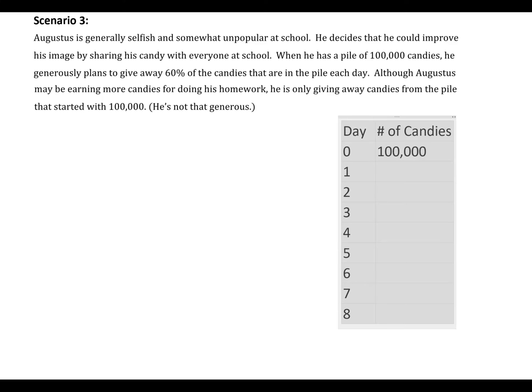But again, scenario three is the focus of this task. Since scenario three is the focus of the task, I'm going to read through this entirely. It says: 'Augustus is generally selfish and somewhat unpopular at school. He decides that he could improve his image by sharing his candy with everyone at school. When he has a pile of 100,000 candies, he generously plans to give away 60% of the candies that are in the pile each day. Although Augustus may be earning more candies for doing his homework, he's only giving away candies from the pile that started with 100,000. He's not that generous.'